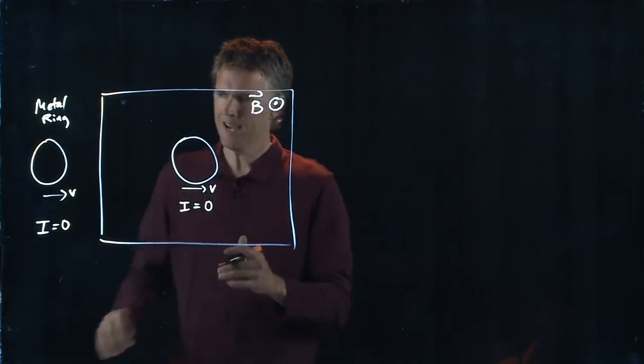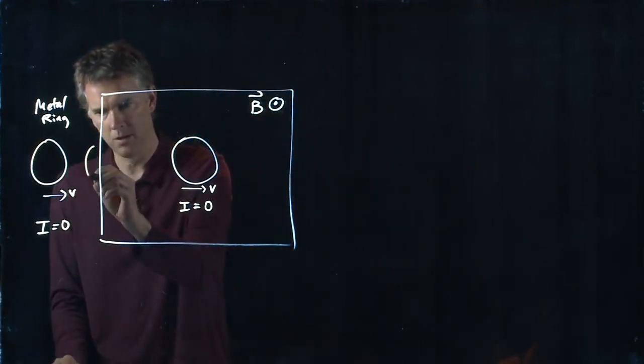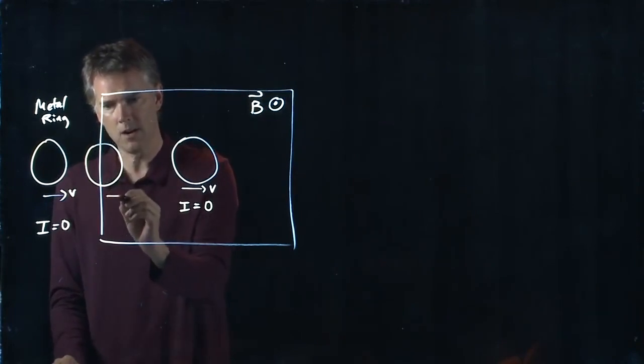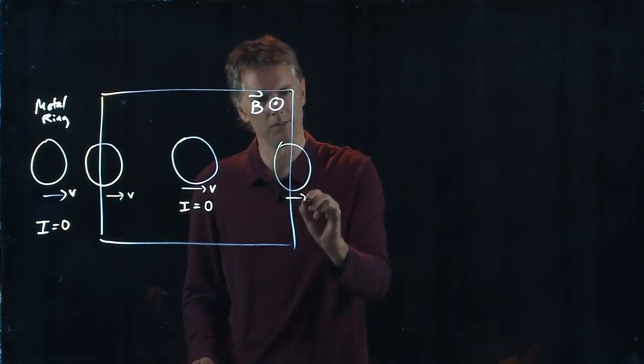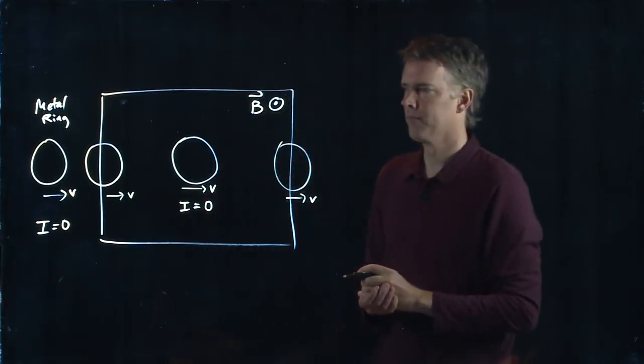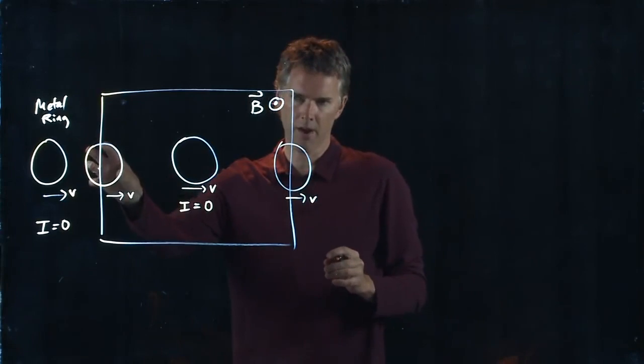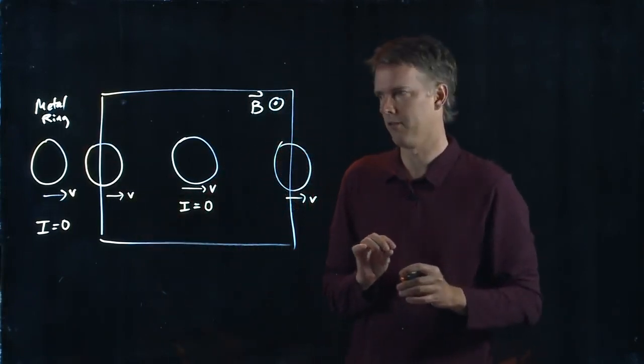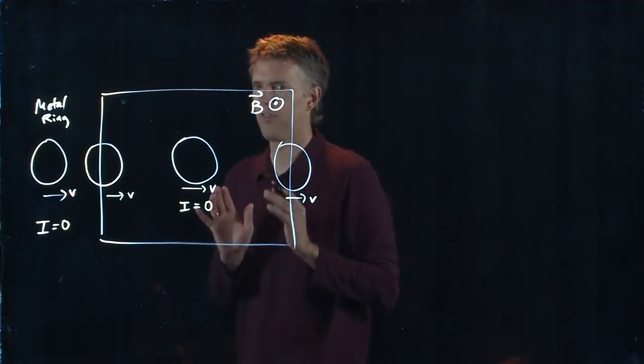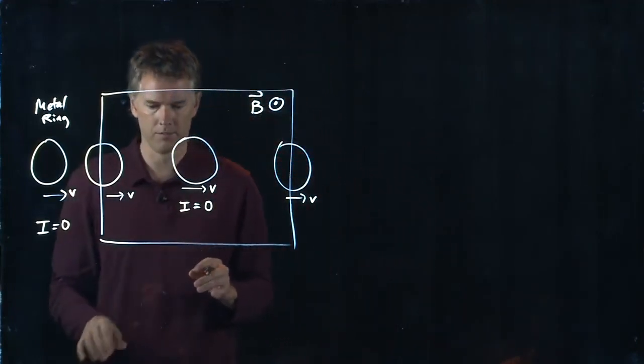So the only time something interesting happens is right here where it crosses and right here where it crosses. When it crosses there and it crosses there, the current is no longer zero. And now we have to think about the flux.